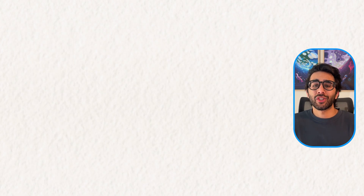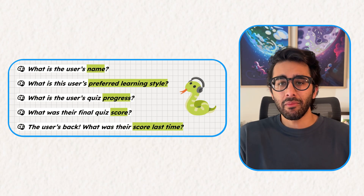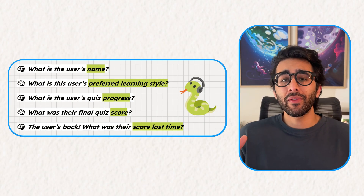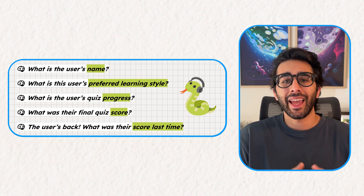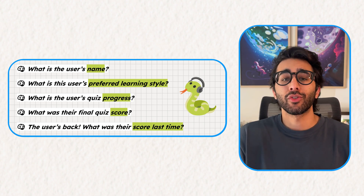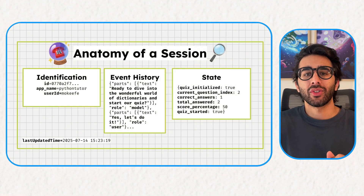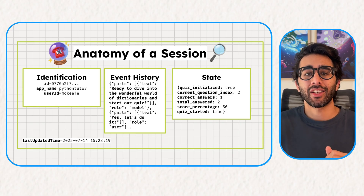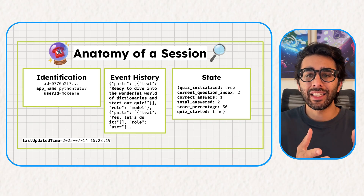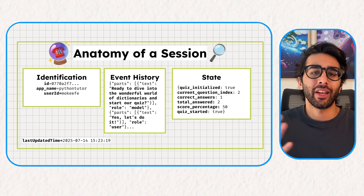But what if we wanted this agent to remember things, like the user's name or their previous quiz score? To create a truly personalized experience, an agent needs to remember past interactions. To have our agent remember things within a single conversation, we need to use what ADK calls short-term memory. Let's start with the foundational concept of a session.